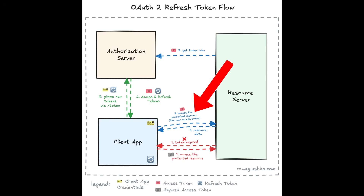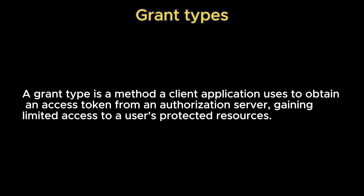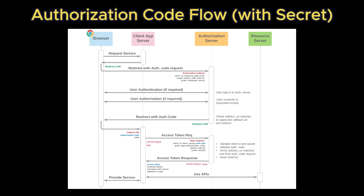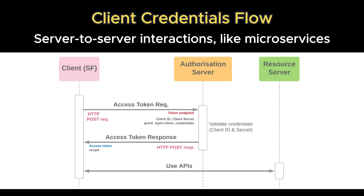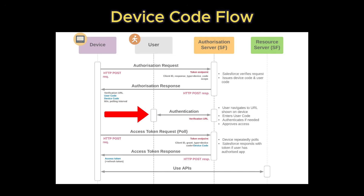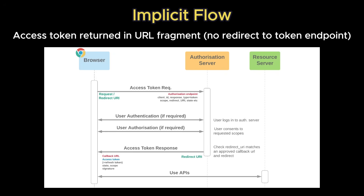There are several grant types or flows in OAuth 2.0, each suited for different scenarios. The most common is the authorization code flow, designed for confidential clients like web servers that can securely store secrets — the client exchanges the authorization code for an access token using its client secret, ensuring tokens aren't exposed in the browser. For public clients like single-page or mobile apps, a variant called the authorization code flow with PKCE — proof key for code exchange — adds protection against interception attacks. PKCE replaces the client secret with a dynamically generated code challenge and verifier, preventing malicious apps from stealing the authorization code during redirection. Other flows include the client credentials flow for server-to-server communication where no user is involved, and the device code flow for devices with limited input capabilities like smart TVs. There's also the deprecated implicit flow, once used for browser-based apps, but now discouraged due to token exposure risks.